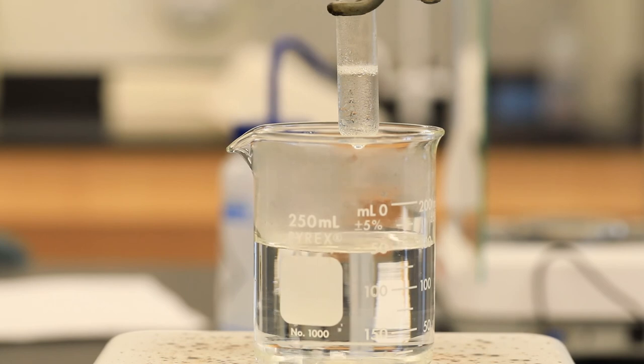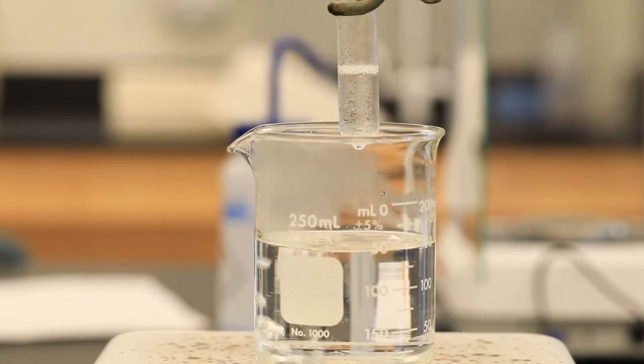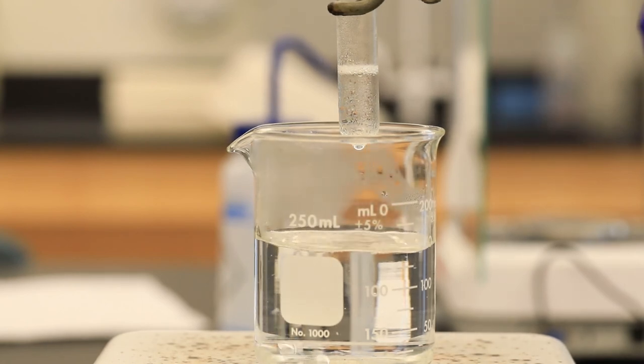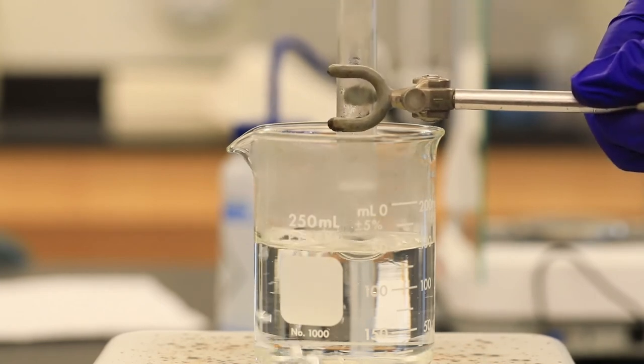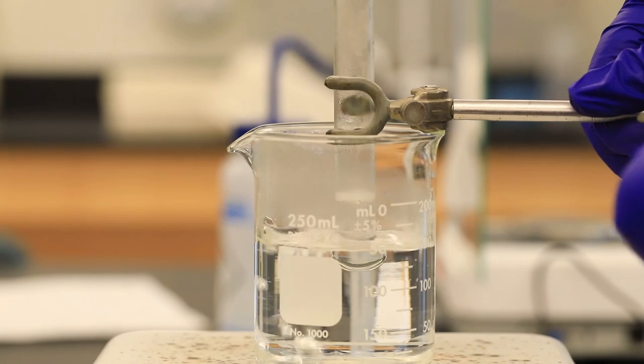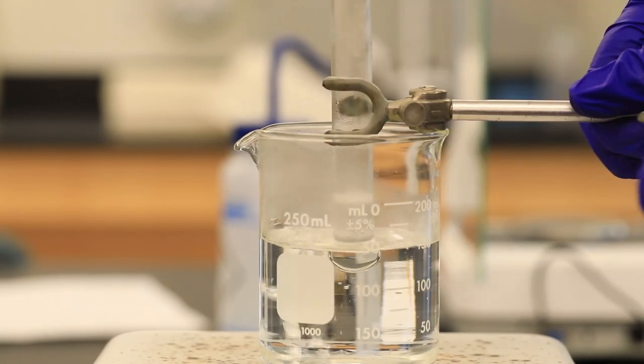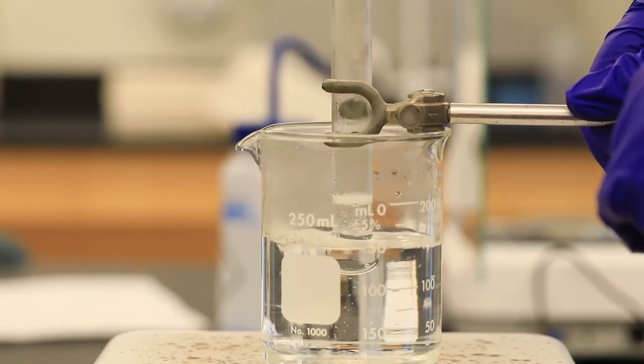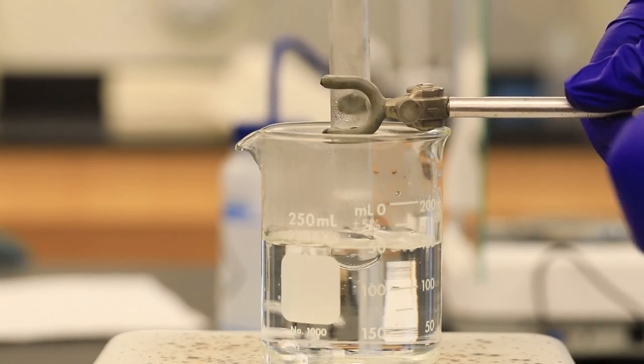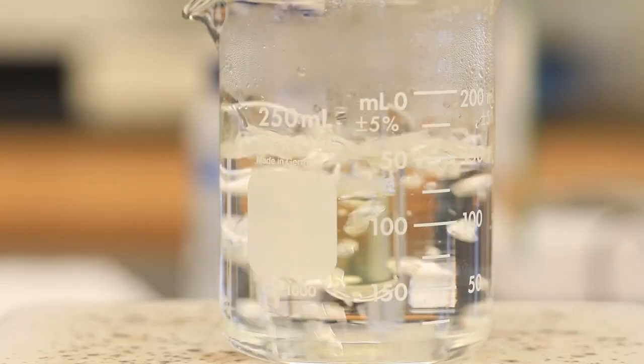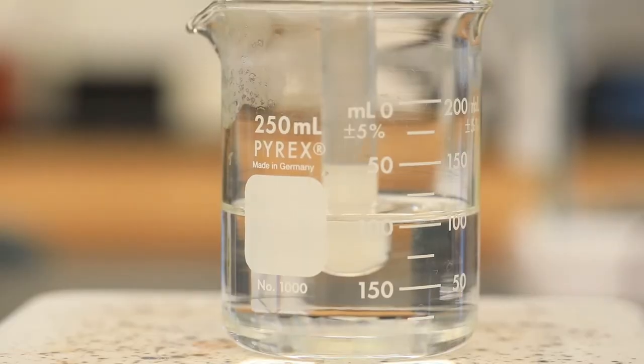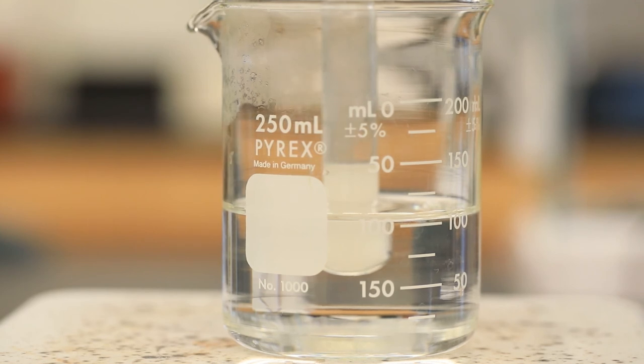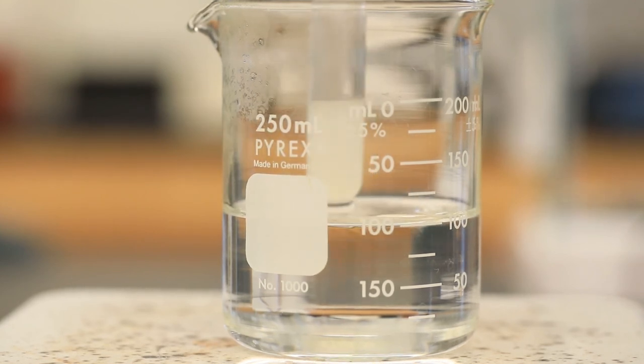In this part of the experiment, we're going to do the test for heat coagulation. Here we have our solution of casein. I'm going to immerse that in a hot water bath for approximately three minutes, and then we'll come back to see the results. After three minutes of heating, I need you to record exactly what you have observed.